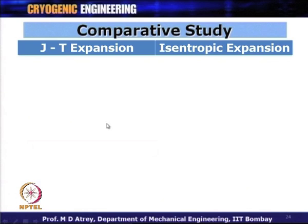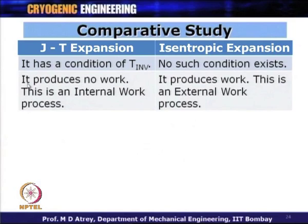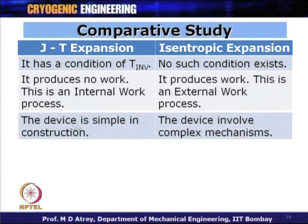Comparing JT expansion with isentropic expansion: JT expansion has a condition of inversion temperature, while isentropic has no such condition. JT expansion yields no work output and is called an internal work process, while isentropic expansion yields work output and is called an external work process. JT expansion uses a very simple device, while isentropic expansion requires rotary mechanisms, reciprocating mechanisms, linkages, and frictional losses — a complex device.